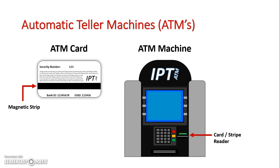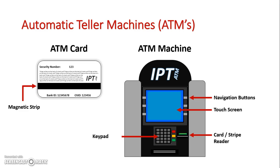After the card has been entered into the ATM machine, the user then has to enter their pin number on the keypad to identify that it is their card. Once they are logged into the machine, they can navigate menus using navigation buttons or touchscreens, depending on which ATM they are using. Once completed, if they are doing a withdrawal, money is then outputted out of the system.